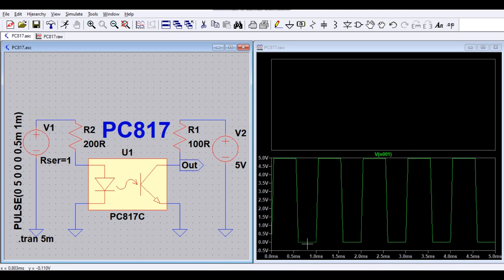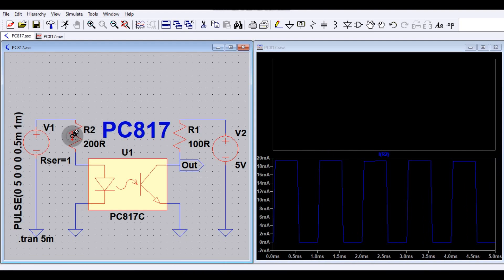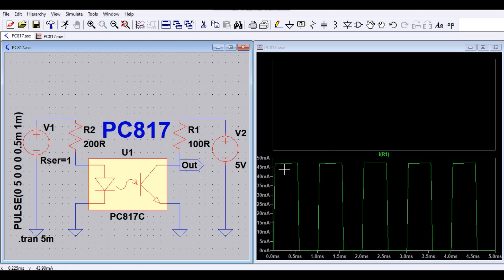Your input voltage is zero to five volt and your current flowing through this optocoupler is you can see zero to around 20 milliampere. So this is your primary side or your input side.